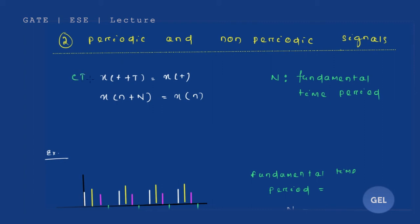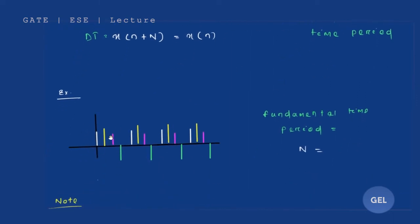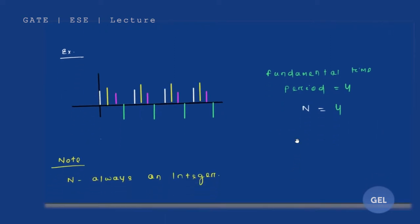In continuous time domain, x(t + T) = x(t) where T is the fundamental time period. Similarly, in discrete time there will be capital N, where N is the fundamental time period. Graphically, a set of samples repeats after a certain interval — for example, four samples repeating means the fundamental time period N equals four. Always remember that N is always an integer, because in discrete time signals we always take integer values.